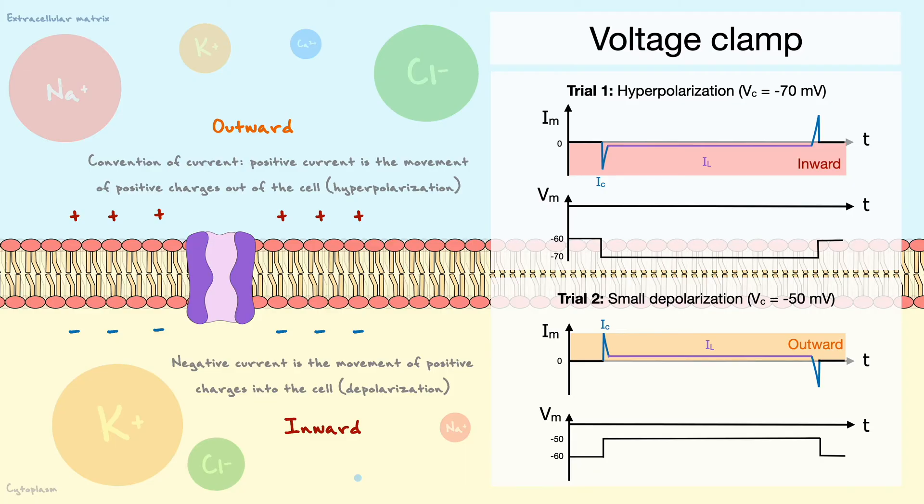The take-home message from these two examples is to exemplify the convention of voltage clamp recordings, that an inward current represents a depolarization, and an outward current represents a hyperpolarization. These definitions are very important, because I will keep using them in the next few sections.